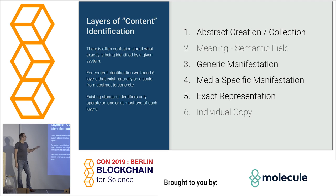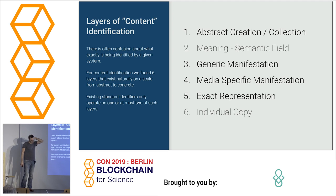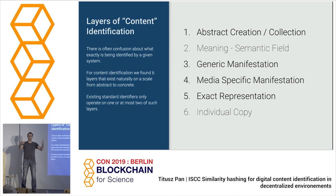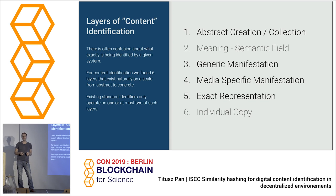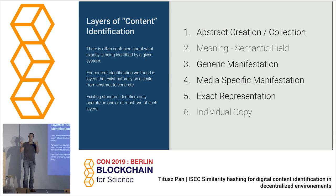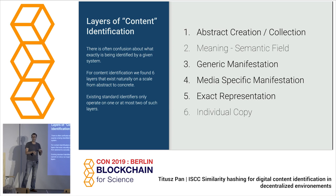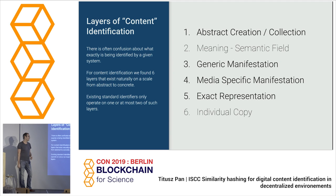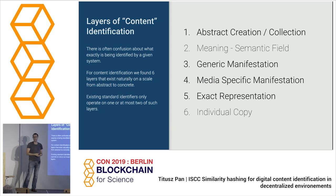On layer three, we talk about a generic manifestation — for example, the plain text extracted from a Word and a PDF document. That plain text is independent from any encoding format. For images, the equivalent is pixel coordinates represented in an abstract generic way. Then we have media-specific manifestations, which are encodings like JPEG and PNG. Then exact representation, which is bit-by-bit similarity. And finally, the individual copy — what you have in the physical world, like one specific book on your shelf with notes in it, which doesn't exist digitally but comes into play with blockchain-based technologies.